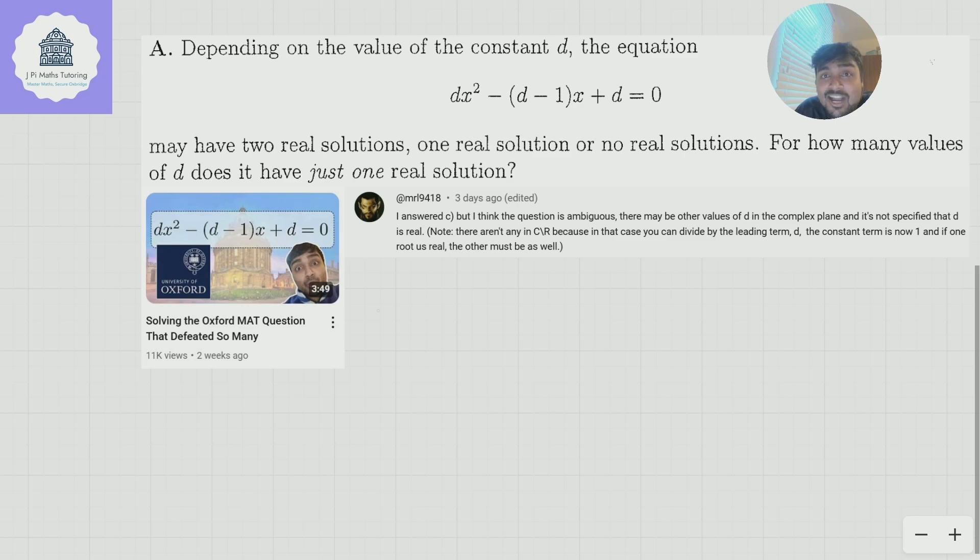I made a mistake. I recently uploaded a video where I was solving the Oxford MAT question dx squared minus (d minus 1)x plus d equals 0, and I have this here. And I was reading the comments, and I realized someone pointed out a big mistake that I had made.